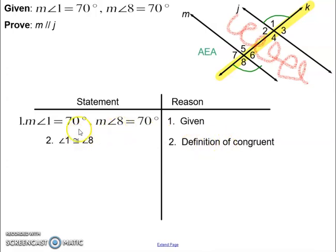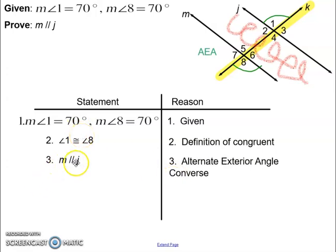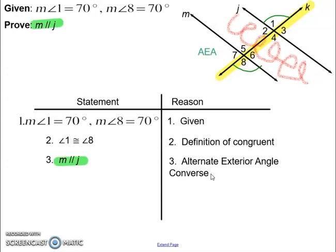The definition of congruent says if they are the same measure, they are congruent. That means my two lines are parallel because that's the alternate exterior angle converse — not the theorem, the converse. If you are trying to prove parallel lines, always use the converse. The converse says if alternate exterior angles are congruent, then the two lines cut by the transversal are parallel. I got to what I was trying to prove, so I'm done.